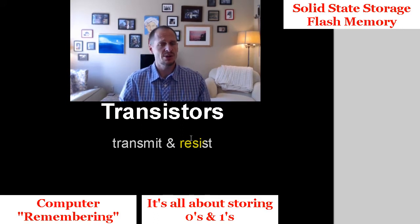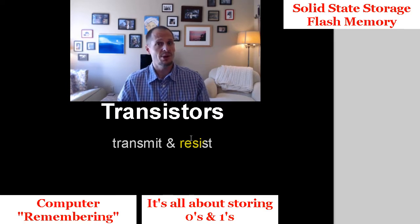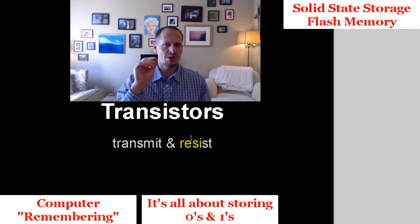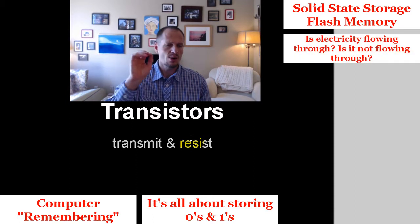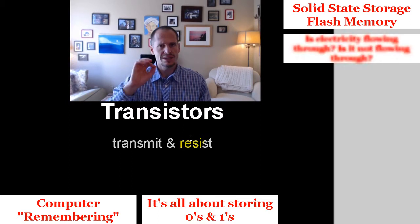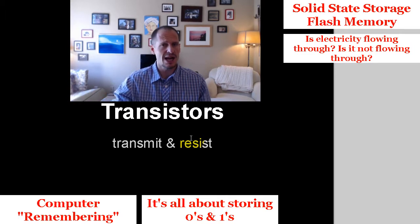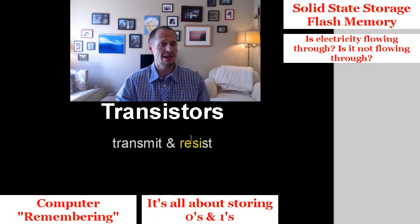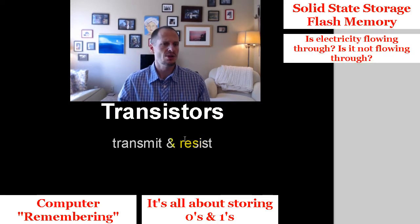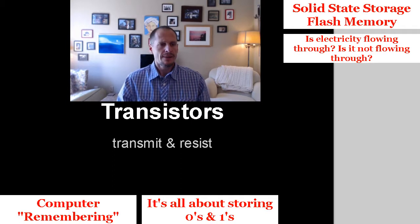With a light switch, if electricity is flowing through the device the light switch is on; if not, it's off. So is there some way we can just detect whether electricity is flowing through a circuit or being resisted? If electricity coming through means one — on — and electricity not coming through means zero — off — then we want to create a device that can transmit or resist. That device is known as a transistor.